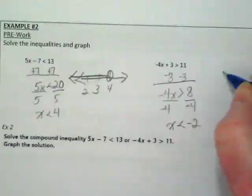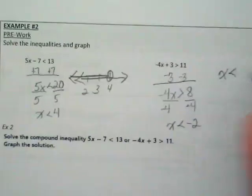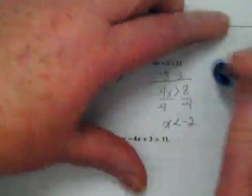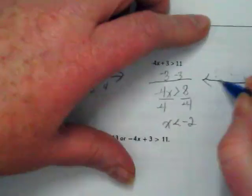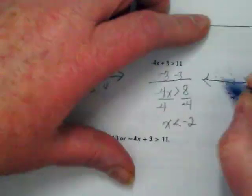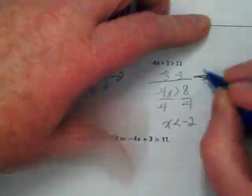This one is x is less than negative 2. Why am I rewriting it? I need to graph it. So we have negative 2, negative 3. I'm just going to stop there, and it goes to the left as well.